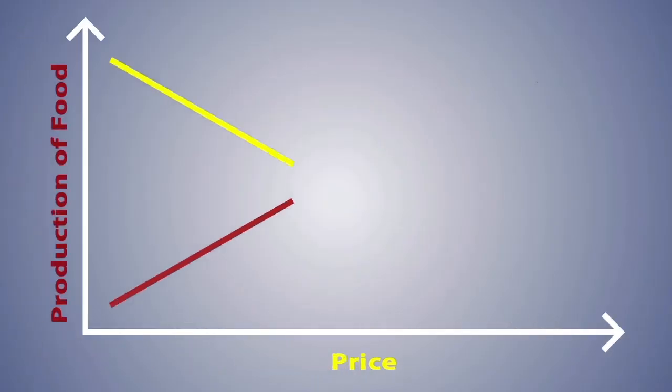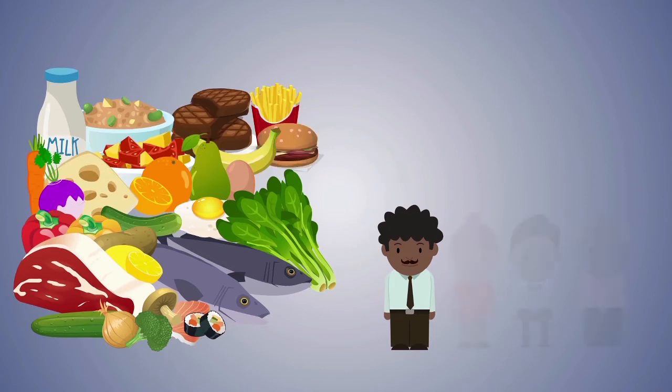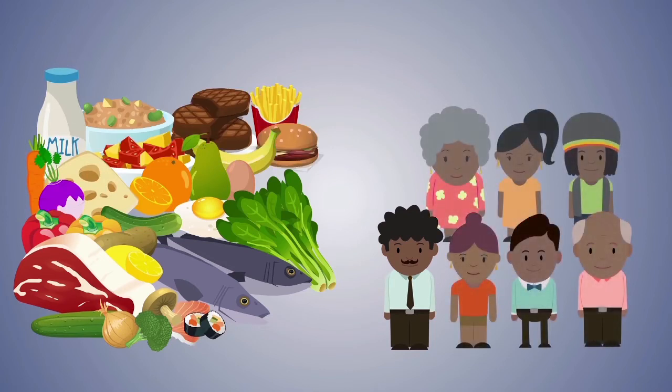So the production of food ramped up massively and decreases the price of common crops. People could afford food more easily and family sizes increased.